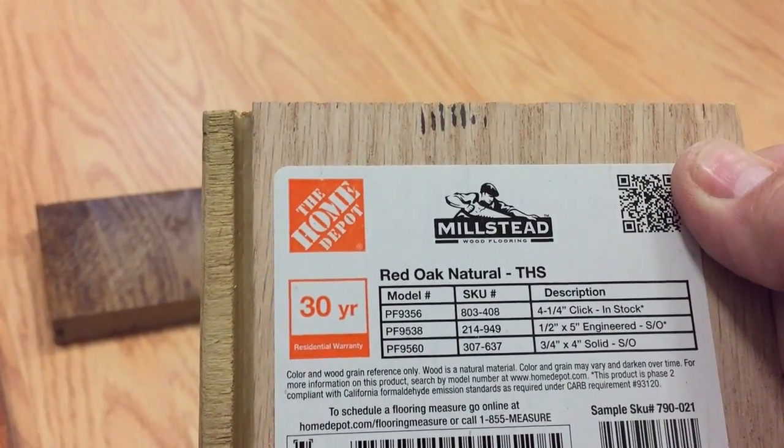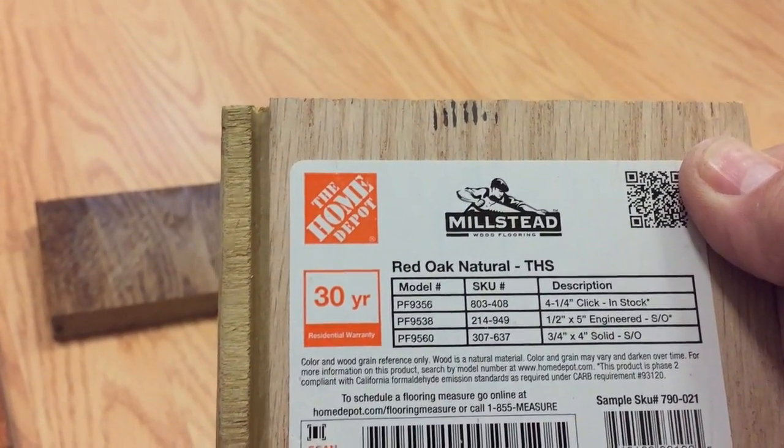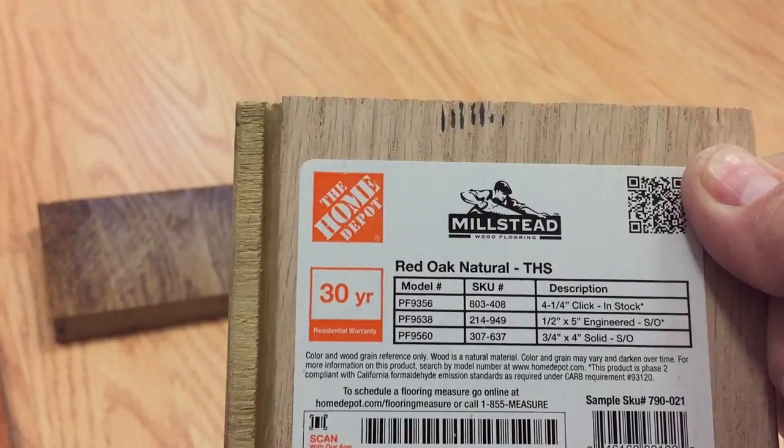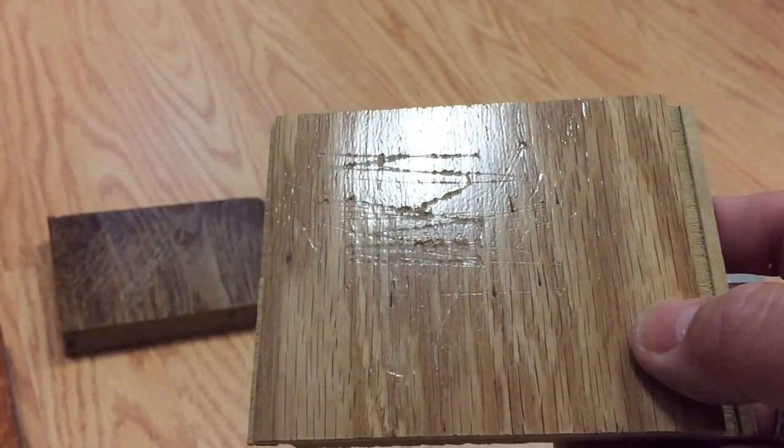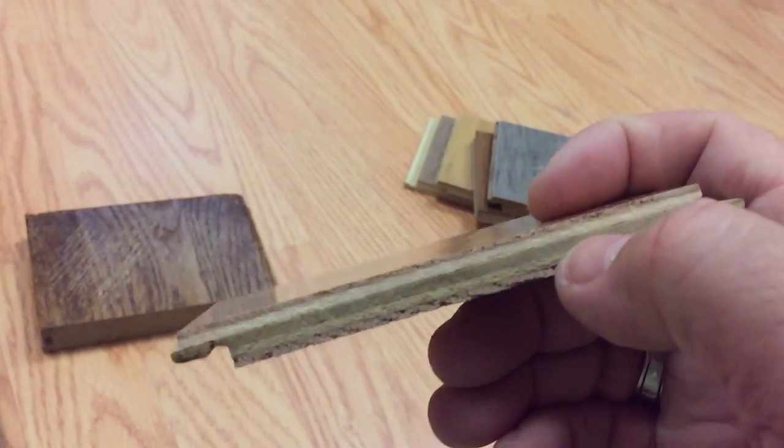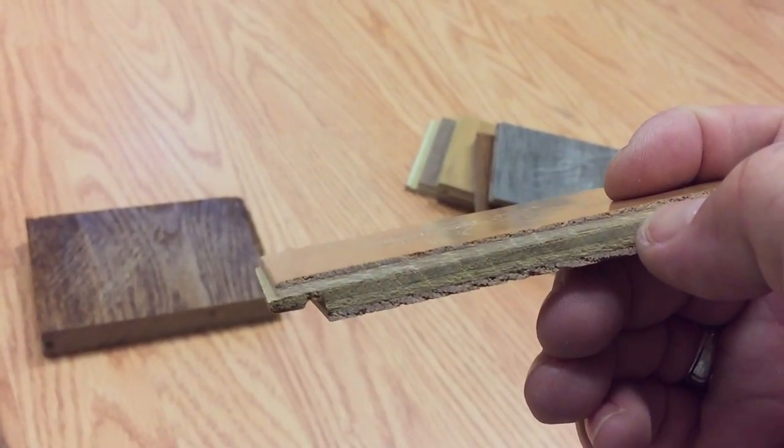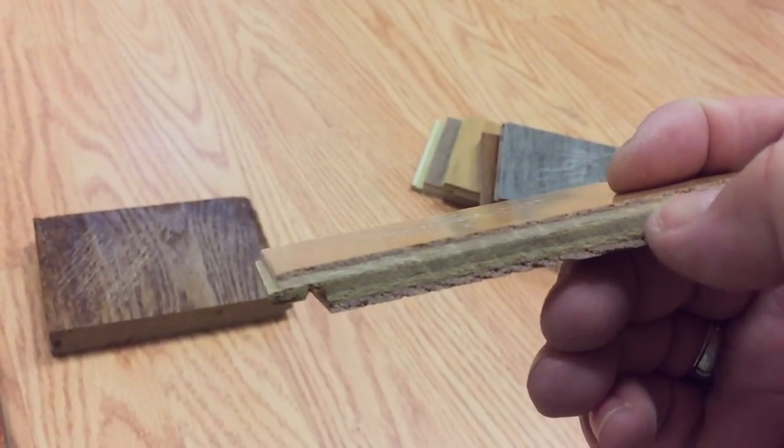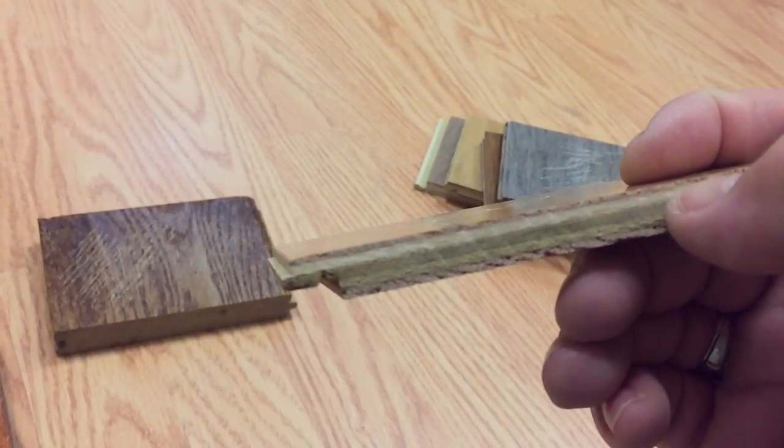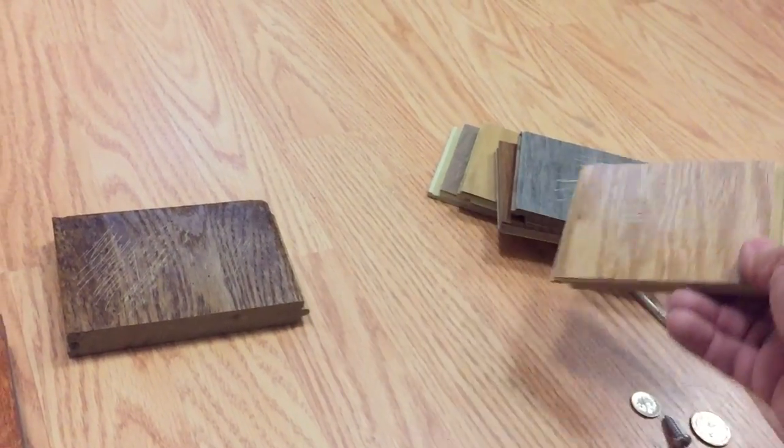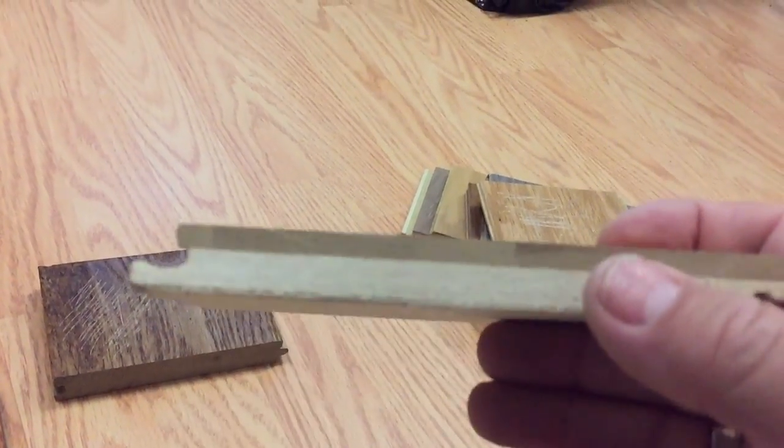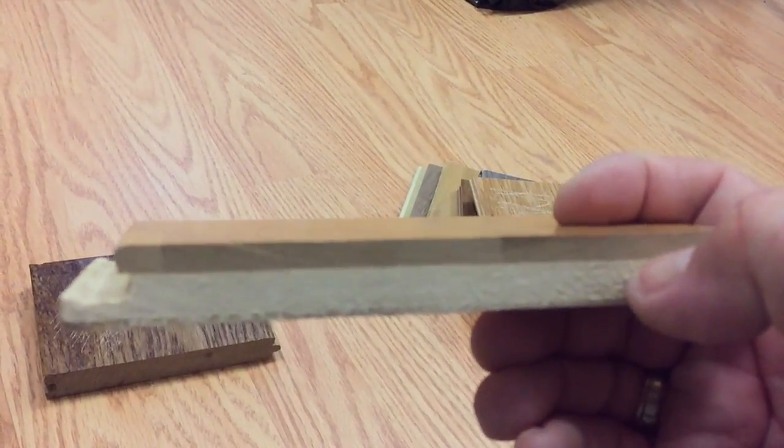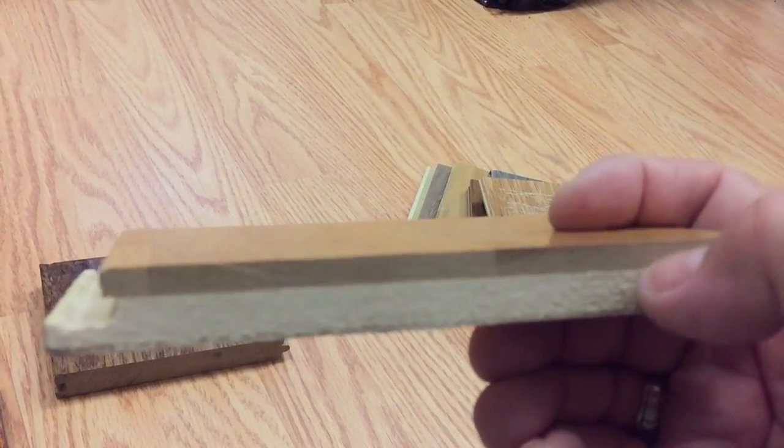Another Home Decorations lifetime, it's a hand scraped strand woven, doesn't do well on the scratch test. So you've got to definitely take it into consideration. This is an engineered Millstead product, 30-year warranty. They gouged it up and essentially you can only go down as far as that thin layer of wood.